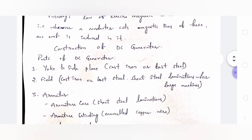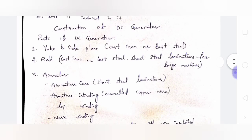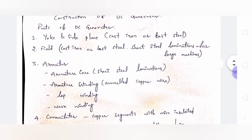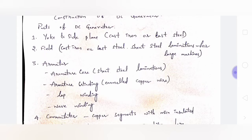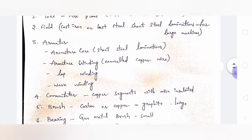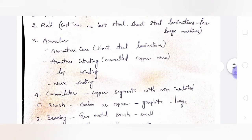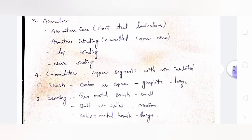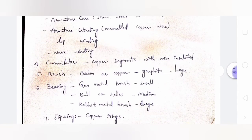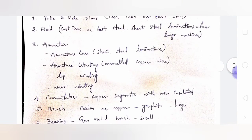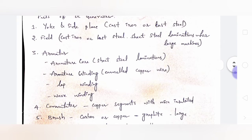The parts of a DC generator are: yoke, field windings, armature, commutator, brushes, bearings, and slip rings.